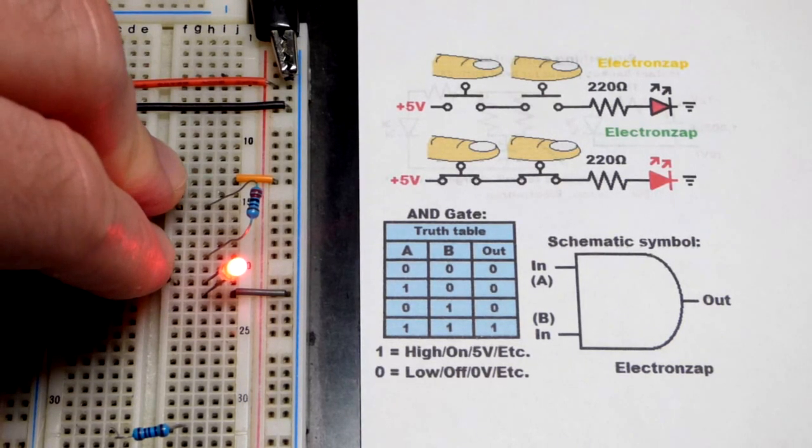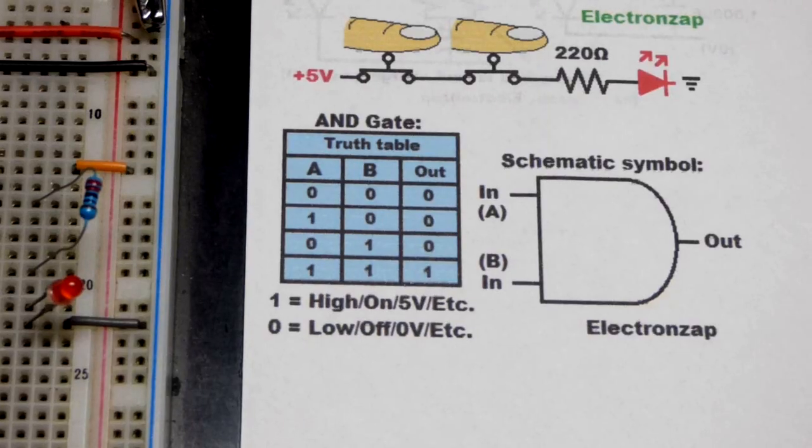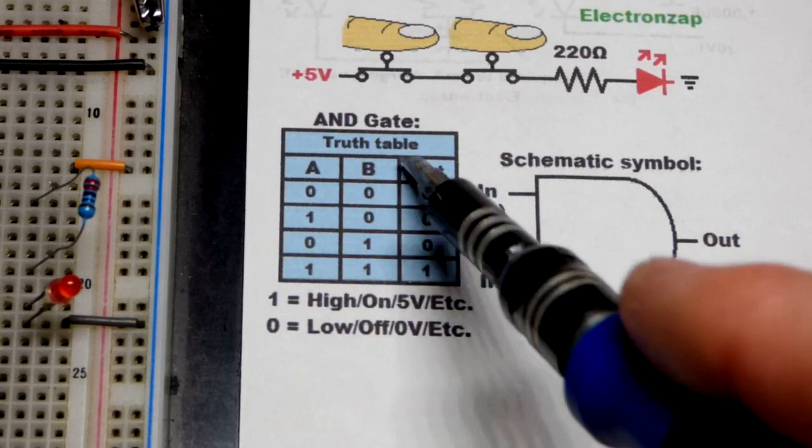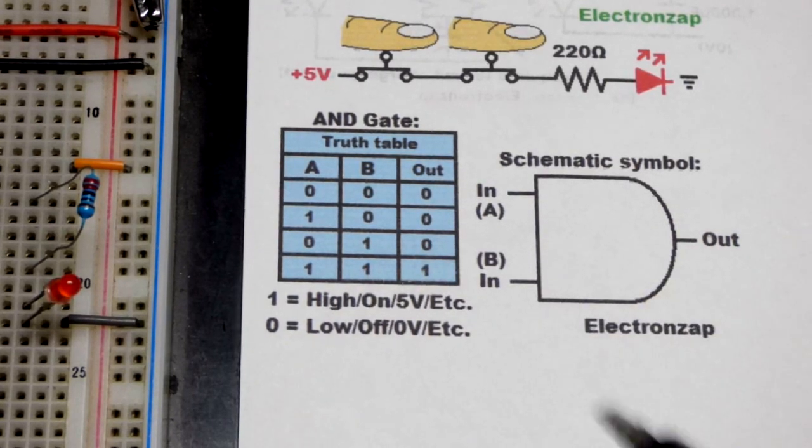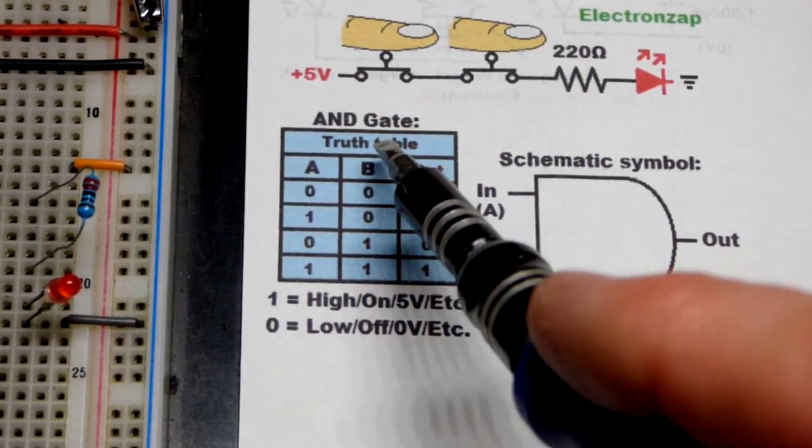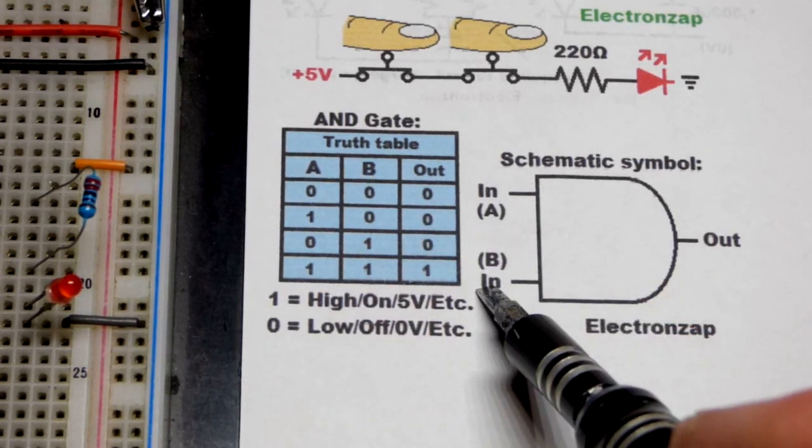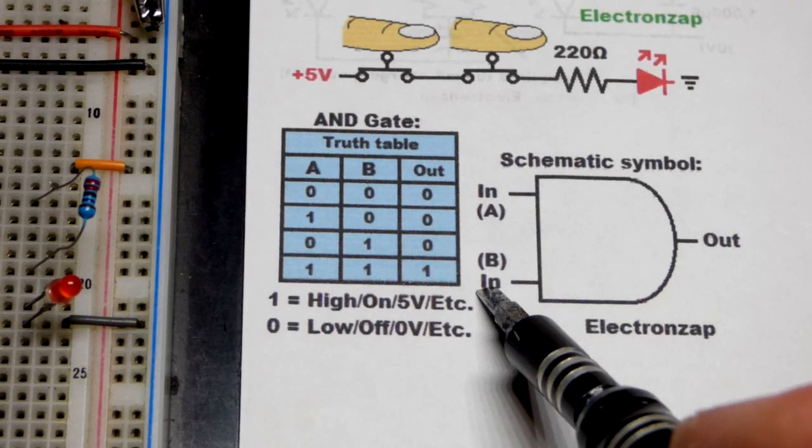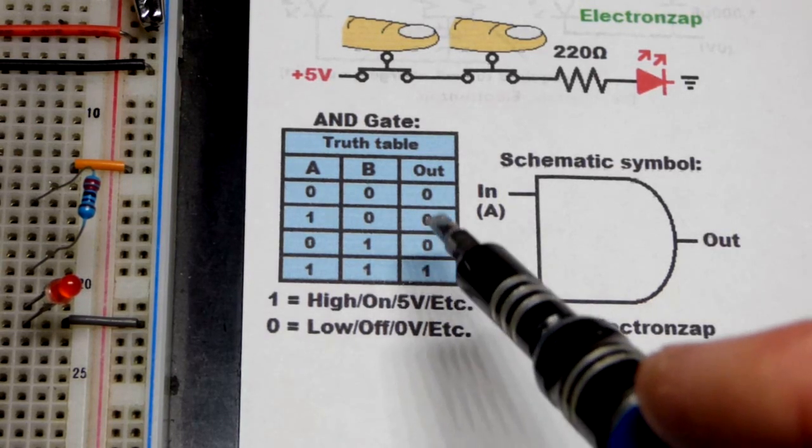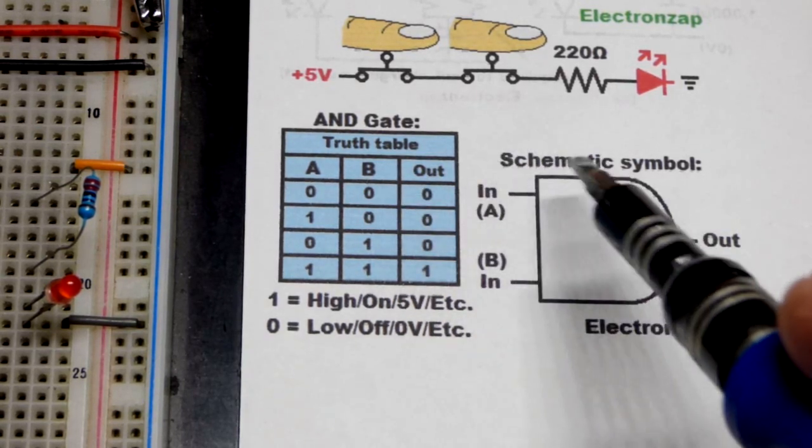So now, of course, the AND gate has a truth table and a schematic symbol. We have the truth table here, so we got two inputs - A and B. There may be more inputs for AND gates. They come with more inputs, so you just have C, D, and so on.